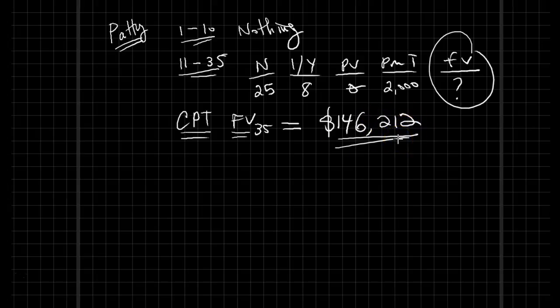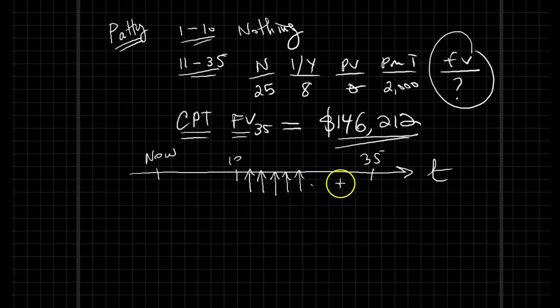Now I want you to be careful. Starting by the end of year 11, she started making deposits for the next 25 years. She deposited 2.5 times more money into the bank account than Selma did.